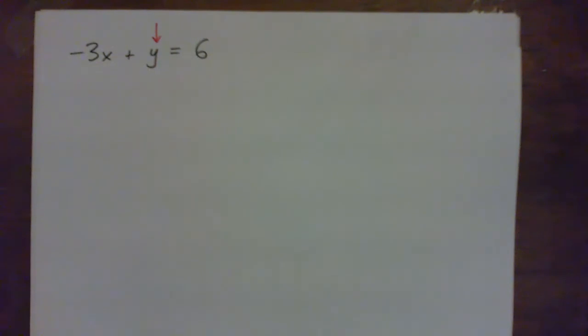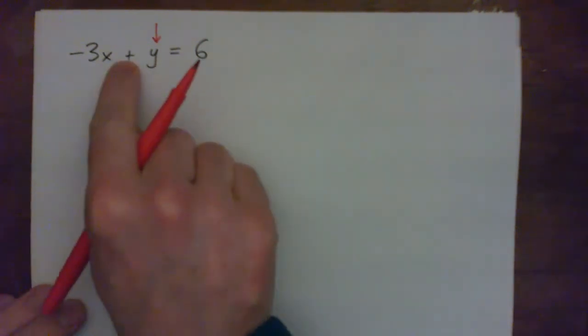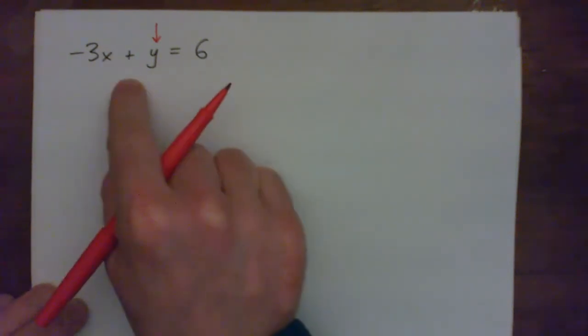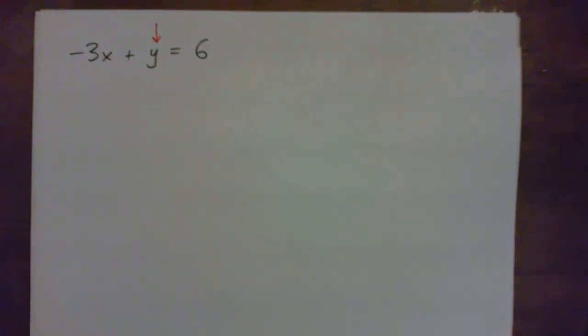The first thing we do is figure out what is being done to y right now. What are the operations applied to y? Well we can see added on to y on the left side of the equation is a negative 3x. So we have to think what is the opposite operation of that? What's the inverse operation of adding a negative 3x? Can you think of how you would undo that?